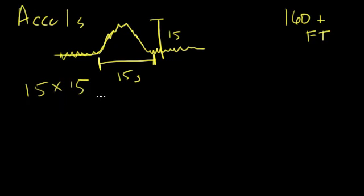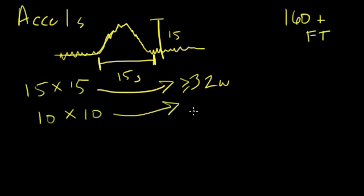You'll see in the notes that I define accelerations a little bit differently depending on the gestational age. This 15 by 15 is for a baby that's greater than or equal to 32 weeks. If the baby is less than that age, then we're looking at 10 by 10 qualifies as an acceleration.